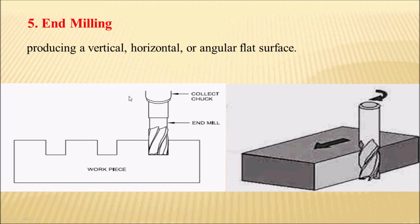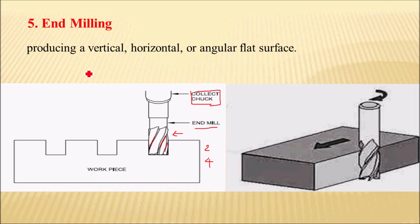Next is end milling. Here you can see an end milling operation setup. The end milling cutter used in this operation has flutes over it — it may be a two-flute or four-flute milling cutter. This end milling cutter is held into the collet chuck. End milling is used to machine vertical, horizontal, or angular flat surfaces.